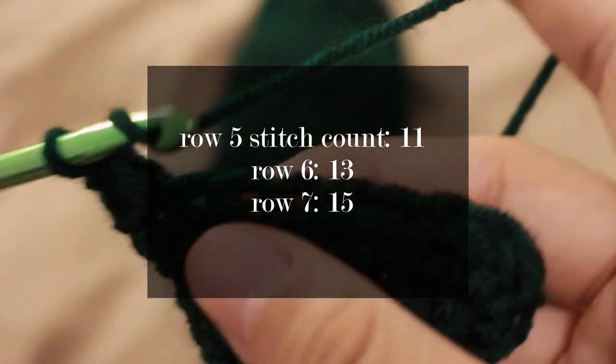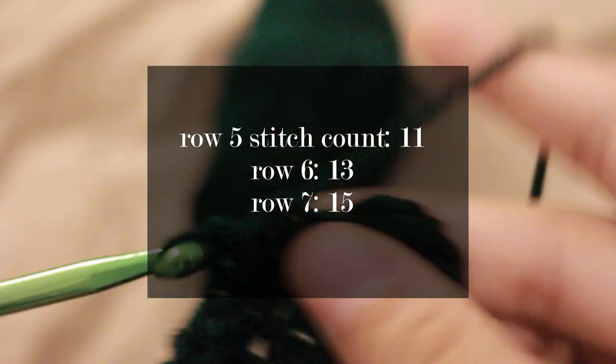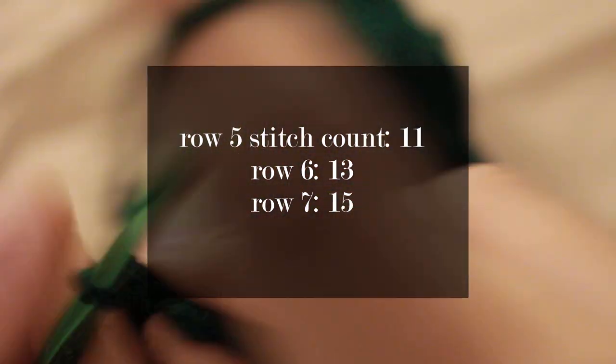For rows 5 through 7, you're going to continue that increase and I'm just going to speed right through it because it's the same process as I've shown you in the first four rows.